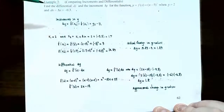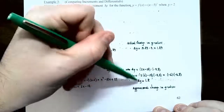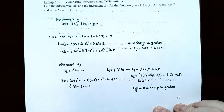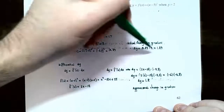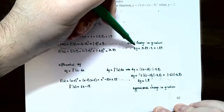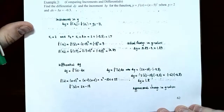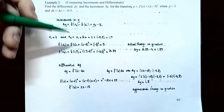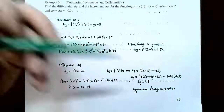So the differential dy is 1.8, which is the approximation. The delta y was the actual change, 1.89. These two values are very close. We can use the tangent line slope to approximate the change in y values very quickly — sometimes calculating exact y values takes more time than evaluating the derivative to find the slope of the tangent line.